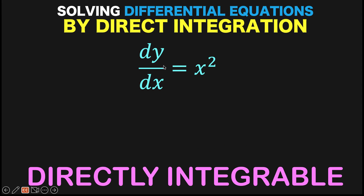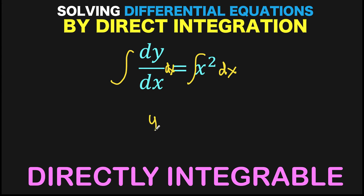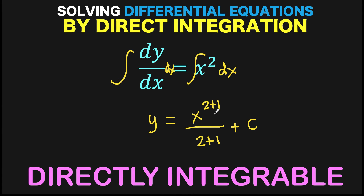Let's have an example. Let's say we have dy over dx equals x squared. Using direct integration to solve this differential equation, we find the antiderivative of both sides. The left side is simply equal to y. For the right side, the antiderivative of x squared dx is x to the 2 plus 1 over the same exponent 2 plus 1, plus an arbitrary constant c. This uses the power rule of antidifferentiation. Simplifying, we get y equals x cubed over 3 plus c.